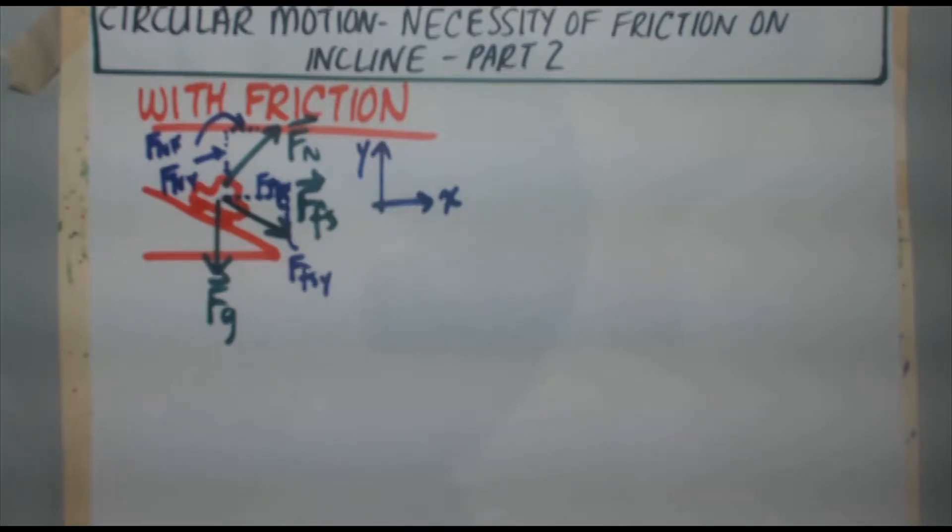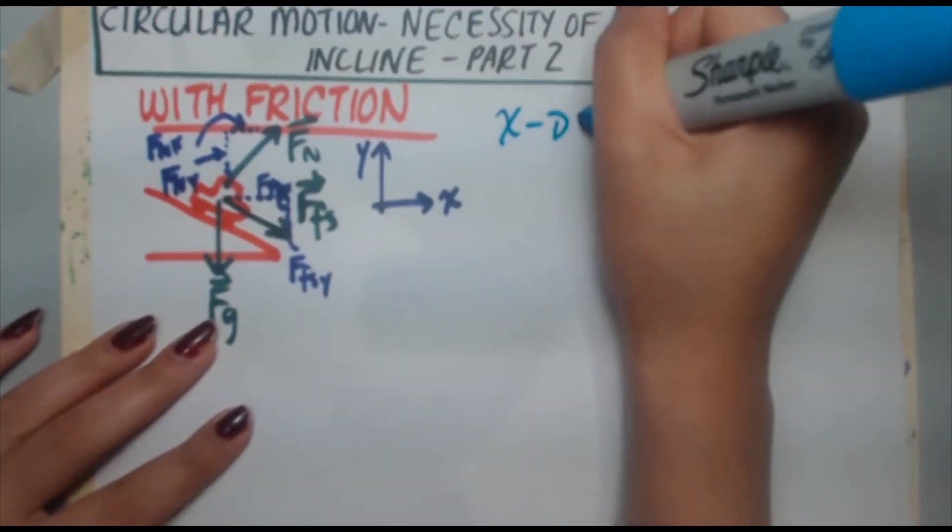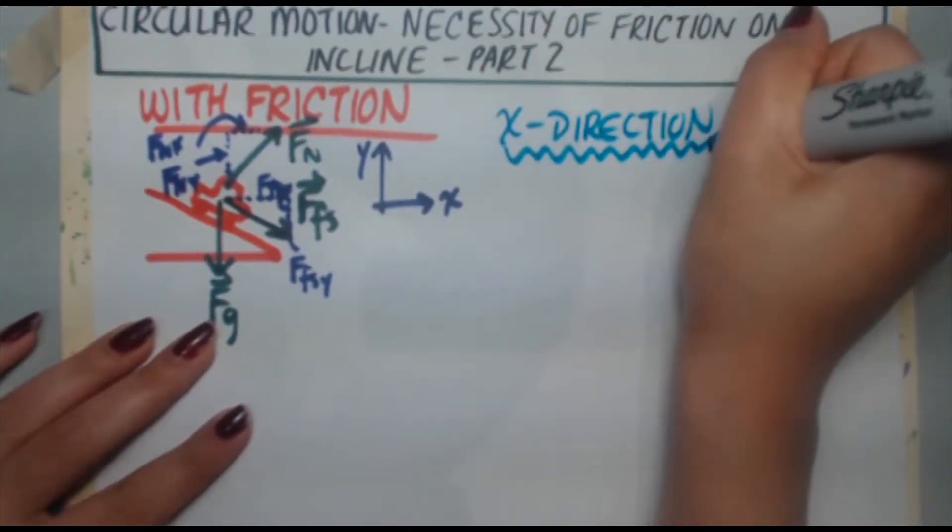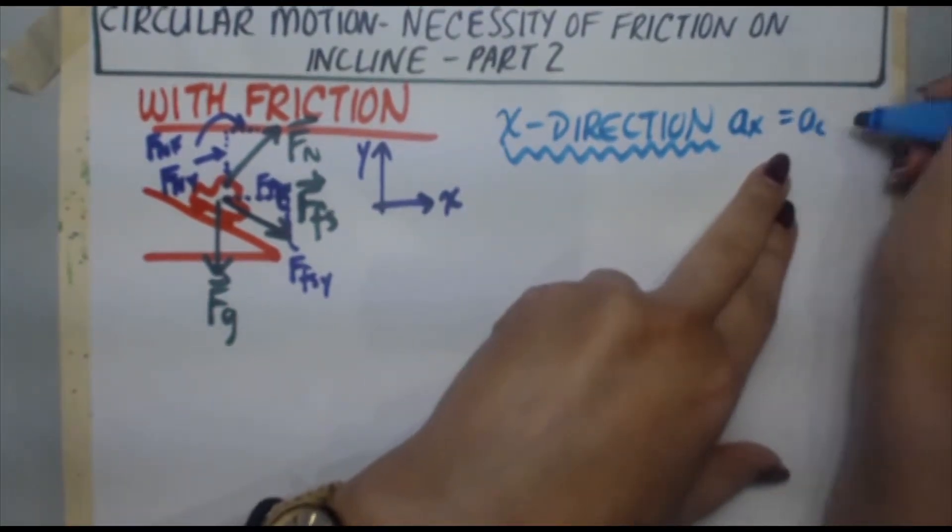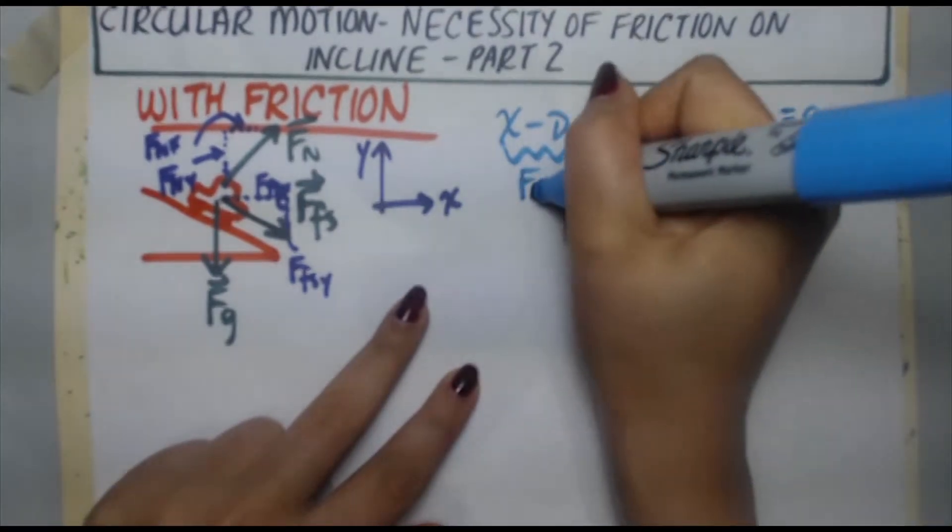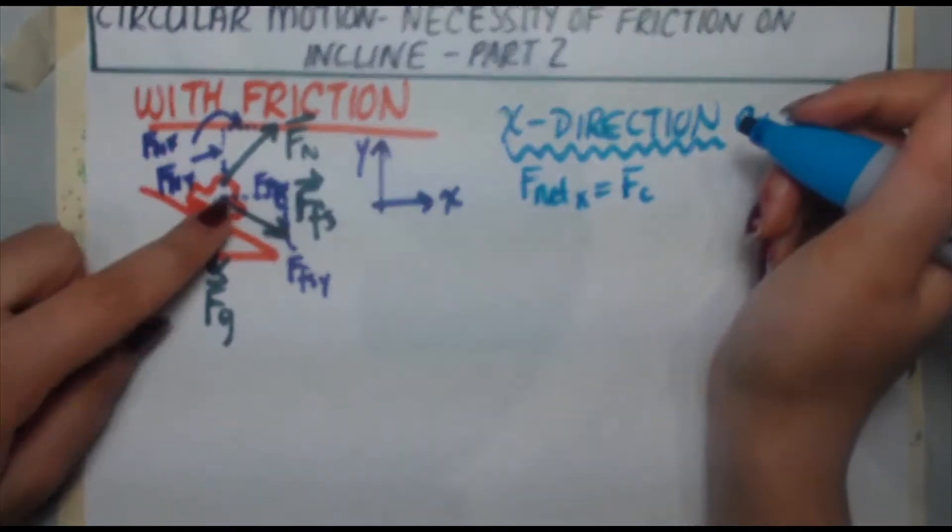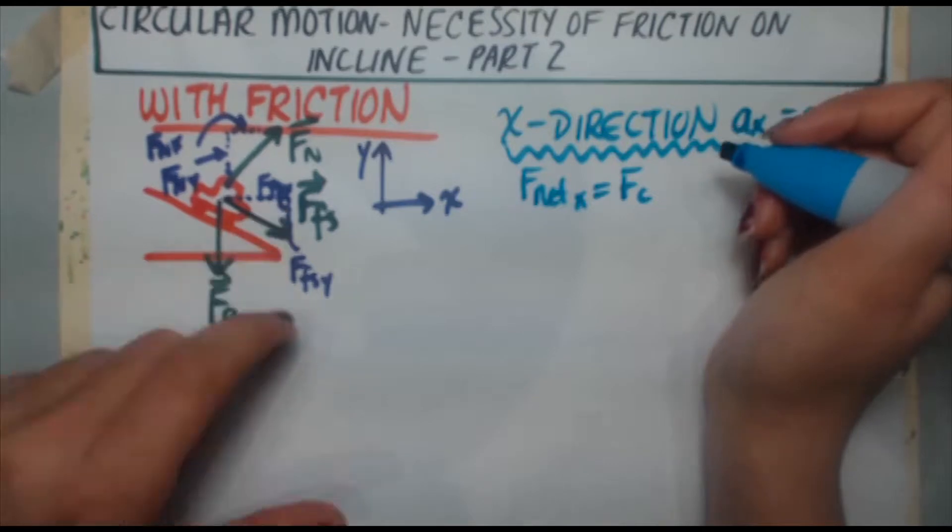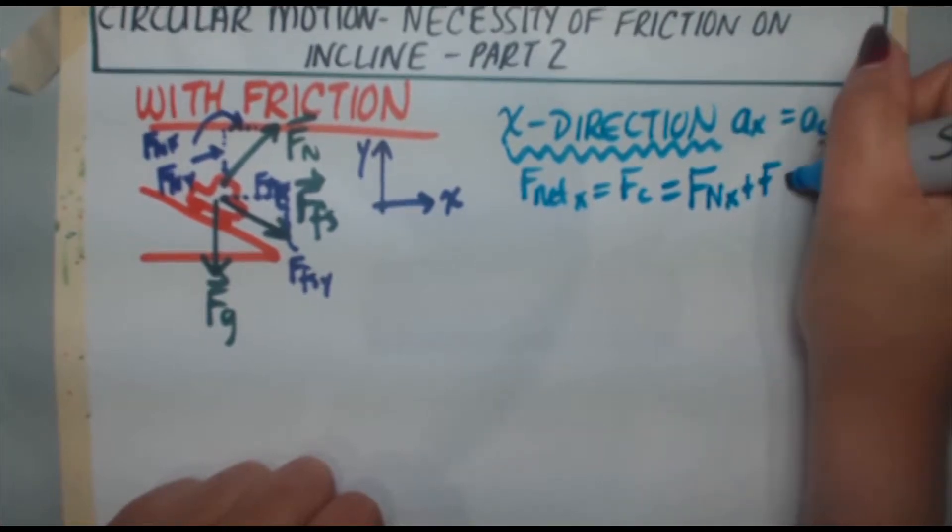I want to work with the x direction here, because that's the one that deals with the friction force and the centripetal force. In the x direction, we know that there is an acceleration. The acceleration in the x direction is the centripetal acceleration. So F net x is equal to the centripetal force. In this case, we have Fnx and FFS x. They're both going to the right in a positive direction.